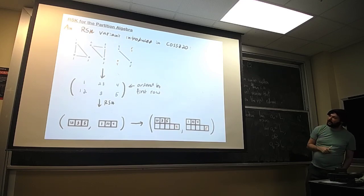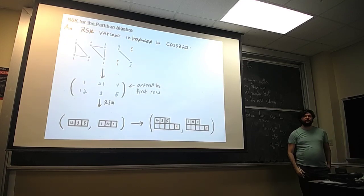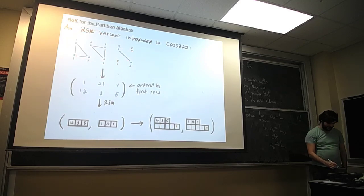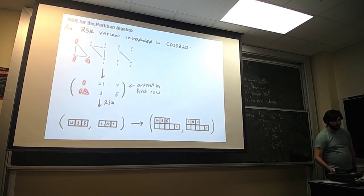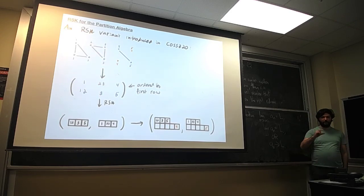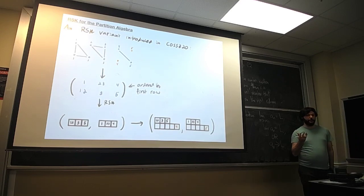What this RSK variant does is: starting with one of our partition diagrams, it focuses on the blocks that propagate from the top to the bottom — colored in blue. It splits all these pieces in half and loads them into an array. So here we have a (1) on top, (1,2) on bottom, and a block that splits to a (2,3) on top and (3) on bottom. We put this into a two-line array, order it by the first row, then apply RSK essentially exactly as we did for permutations.